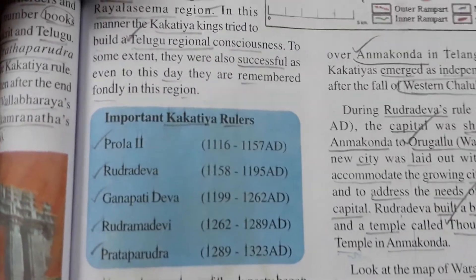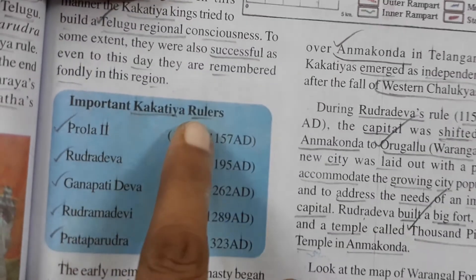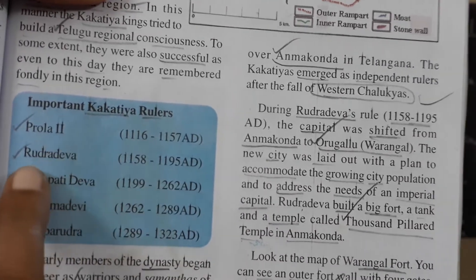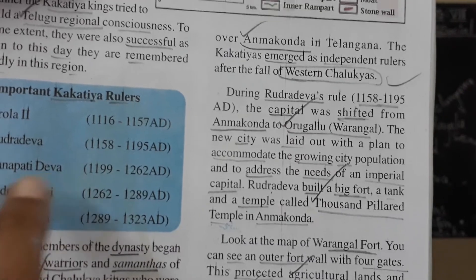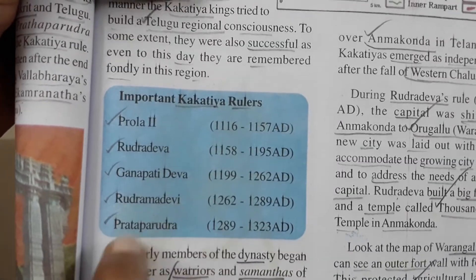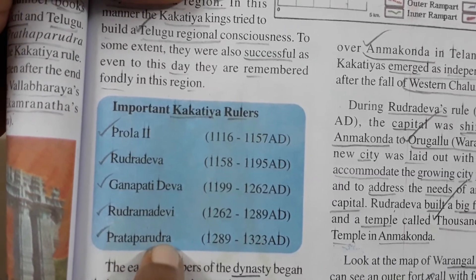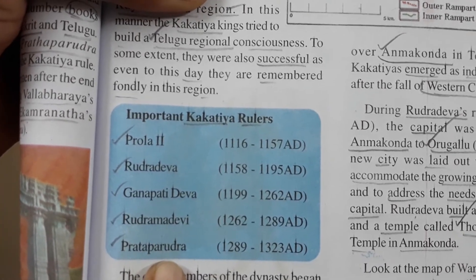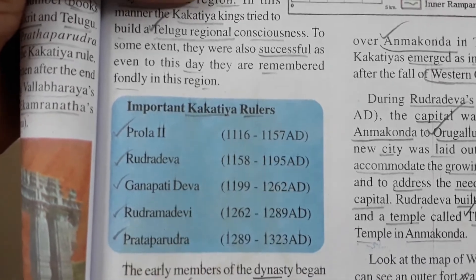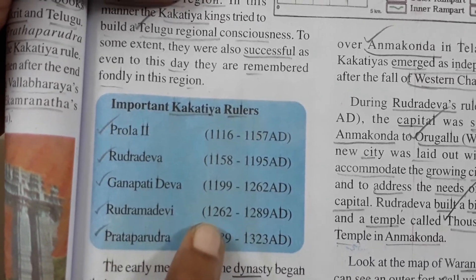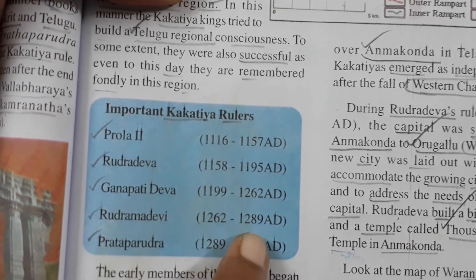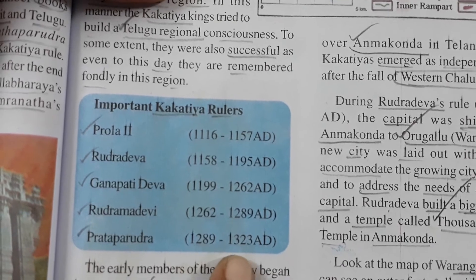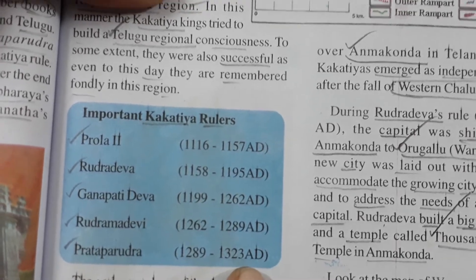Here the timeline is also given with important Kakatiya rulers: Prolatu, Rudradeva, Ganapati Deva, Rudramadevi, and Prataparudra. These are the kings of this kingdom and their periods. For example, Rudramadevi ruled from 1262 to 1289 AD, and Prataparudra ruled from 1289 to 1323 AD.